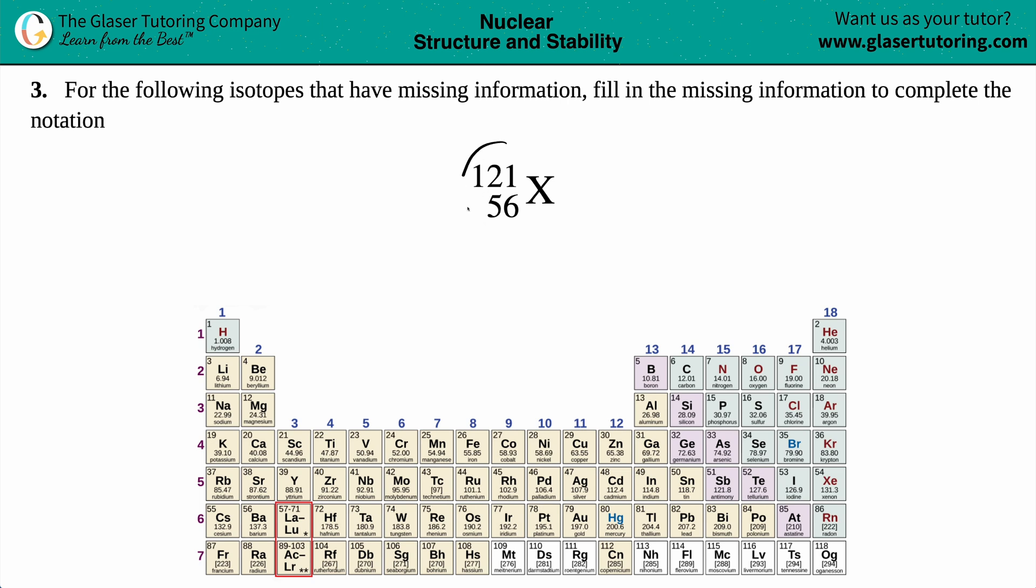Okay, so here's our example here. We have a 121 on the top, we got a 56 on the bottom, and then we have an X value. Just know that an X is never on the periodic table. So this is the missing information that they want us to find.